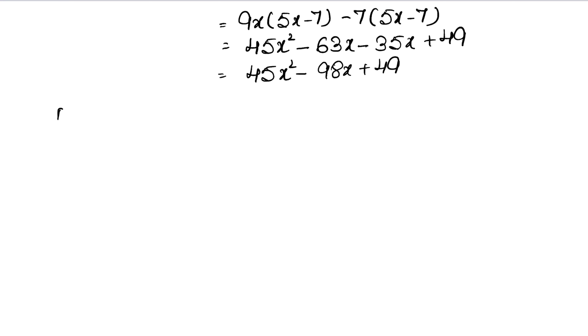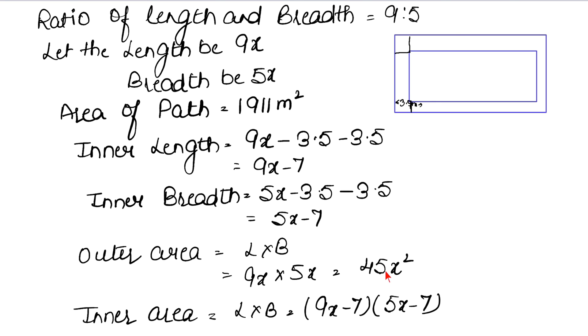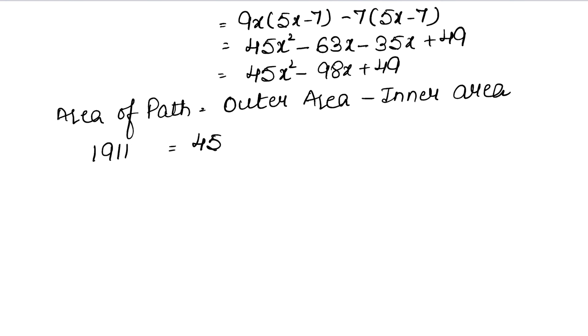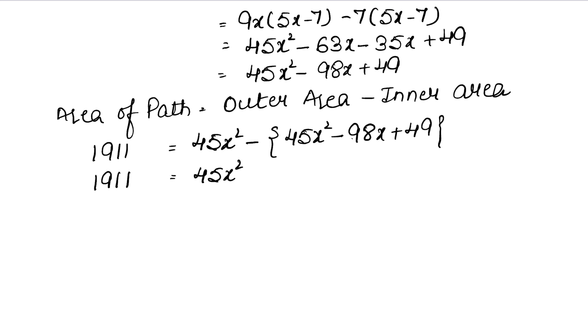Now the area of path formula: Area of path equals outer area minus inner area. The area of path given is 1911 square meters. Outer area is 45x². So 1911 = 45x² - (45x² - 98x + 49). Opening the bracket and changing signs: 45x² + 98x - 49. The 45x² terms cancel out.